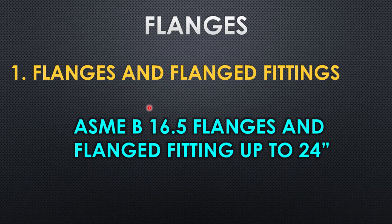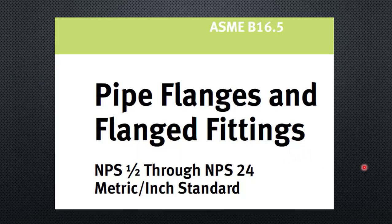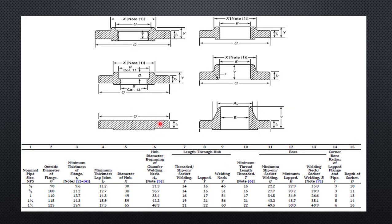The first is standard flanges. The dimensional standard we are referring to is ASME B16.5, and the description of this standard is flanges and flanged fittings up to 24 inch. The title reads: Pipe Flanges and Flanged Fittings, NPS half inch through NPS 24 inch. This is available in both metric and standard. If you open the standard you will be able to see the entire dimensions of all types of flanges — threaded flanges, slip-on, weld neck, and blinds — with end-to-end dimensions of every parameter.